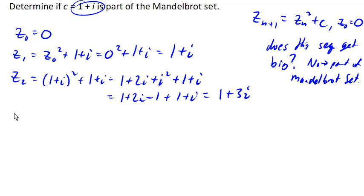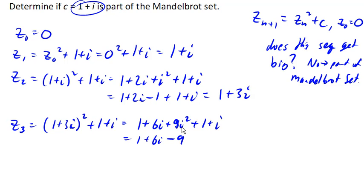z_3 would be z_2 squared plus 1 plus i equals (1+3i)^2 plus 1 plus i equals 1 plus 6i plus 9i squared plus 1 plus i equals 1 plus 6i minus 9 plus 1 plus i. That is negative 7 plus 7i.